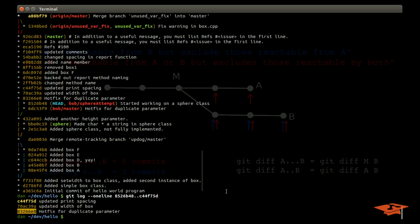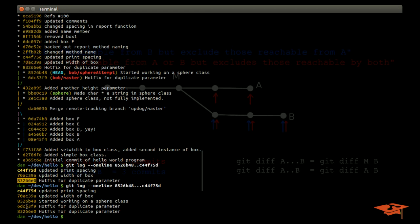So let's go ahead and do the same thing again except we're going to give it triple dot. Same A and B, triple dot notation. What do we see? We see C44. We see all the same commits we had before but also the other commits on the A branch.